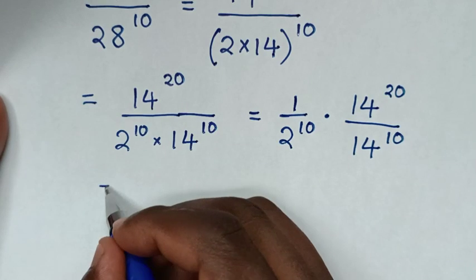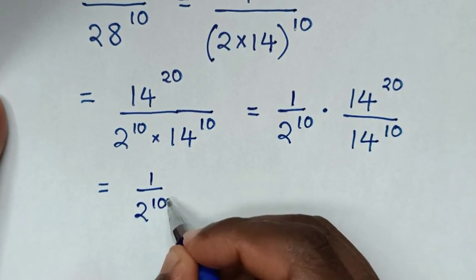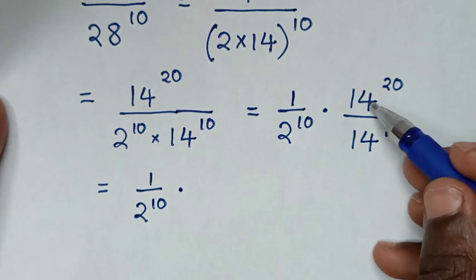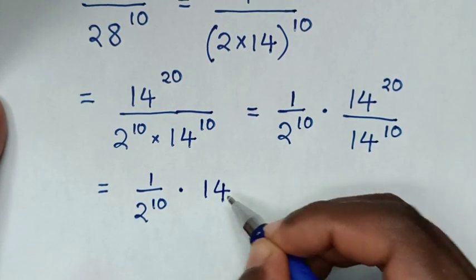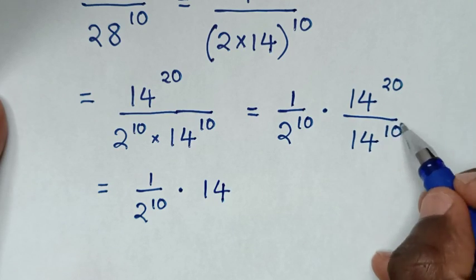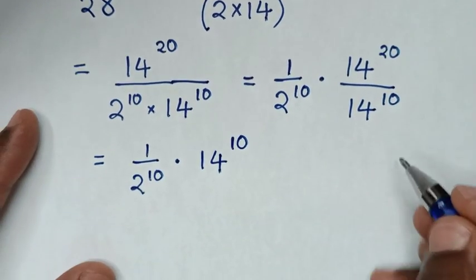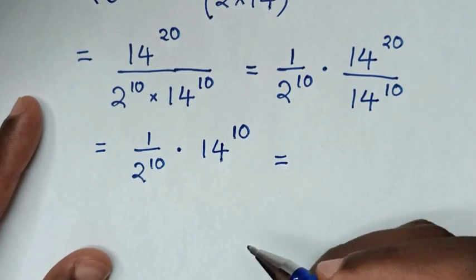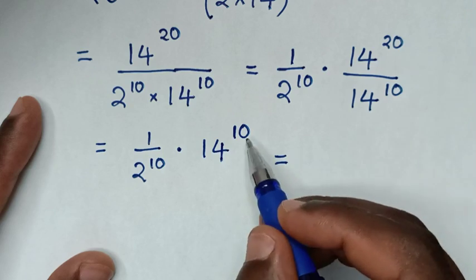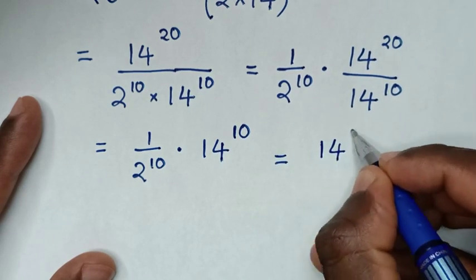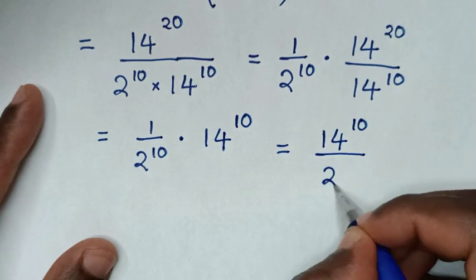So it will be equal to 1 over 2 power of 10, then times — in this division of exponents with the same base of 14 — it will be 14 to the power of 20 minus 10, which is 10. Then it will be 14 power of 10, then over this exponent 2 power of 10.